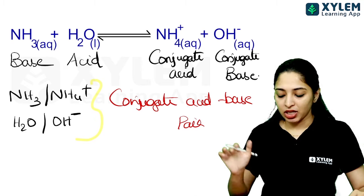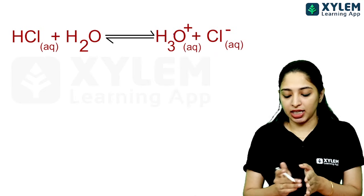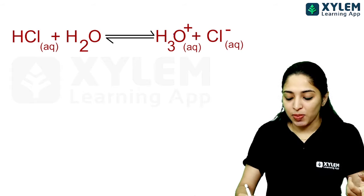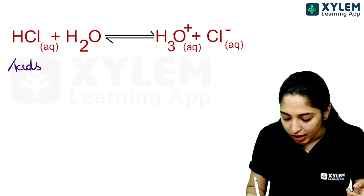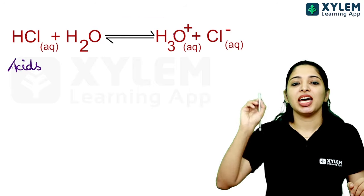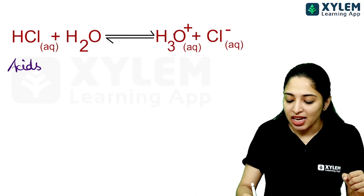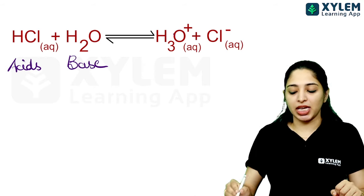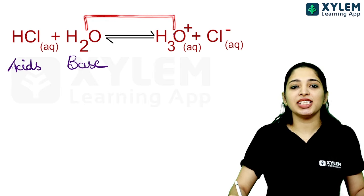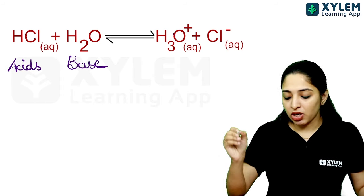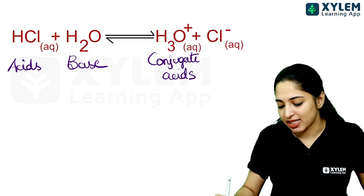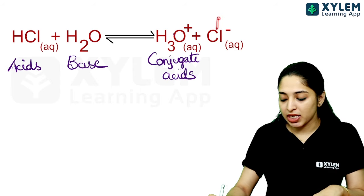Let's take another reaction: HCl and water reacting. HCl donates H+ — HCl is an H+ donor, so it is an acid. Cl minus is formed. H2O accepts H+ and forms H3O+. H+ acceptors are called bases, so here water acts as a base. In the reverse reaction, H3O+ donates one H+ to give back H2O.